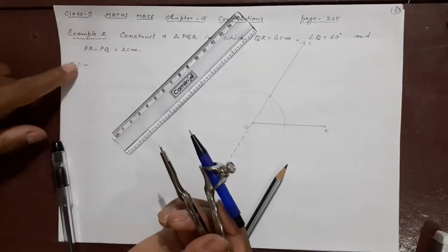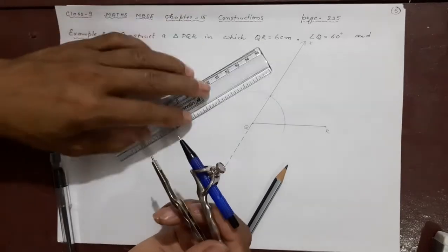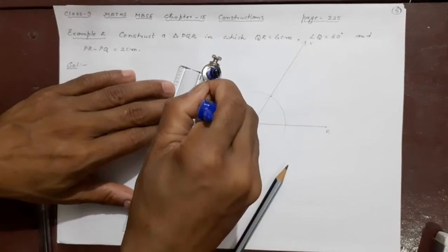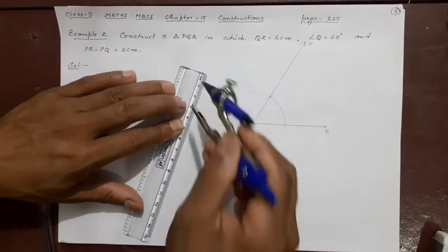Now take that difference. PR minus PQ. How much is that? PR minus PQ is 2 cm. So that 2 cm I will take it here. From here taken. 2 cm here.